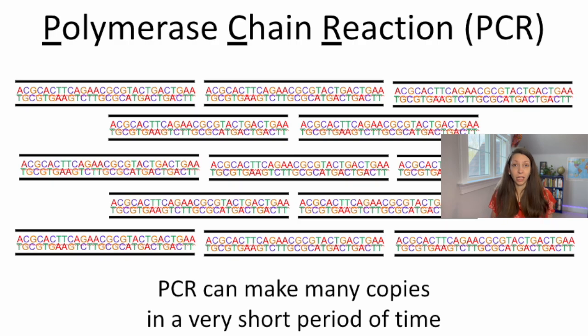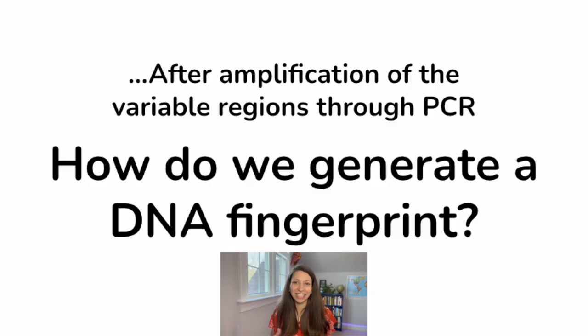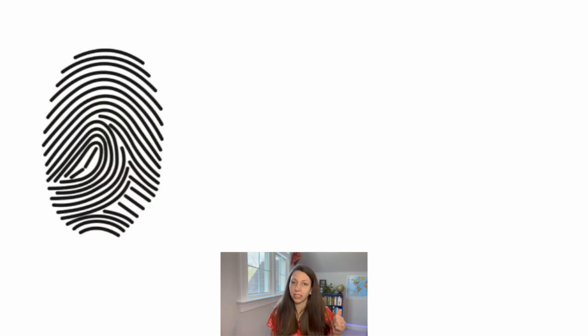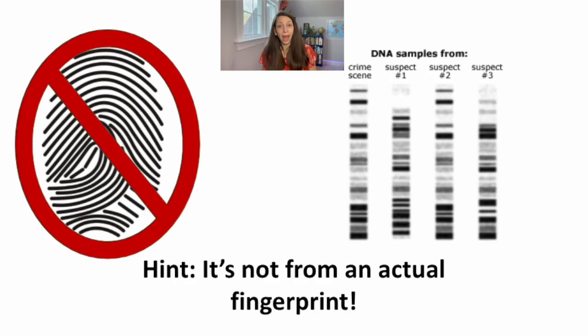After that, we can use this DNA to do a multitude of different things. One very popular use is getting a DNA fingerprint or doing gel electrophoresis. Now hopefully in your 9th grade biology class you learned that this is not a fingerprint actually from your finger, but instead it's a particular pattern of your DNA after we run it through a gel.